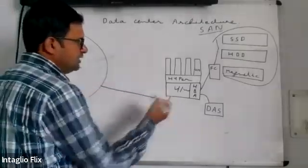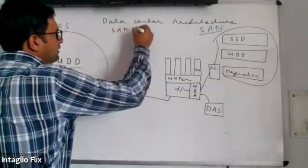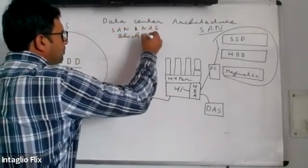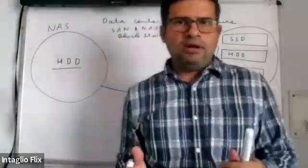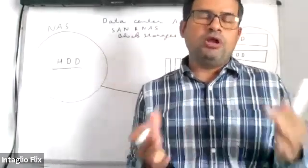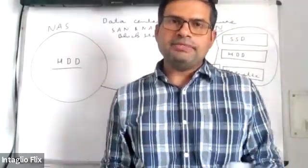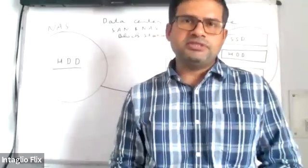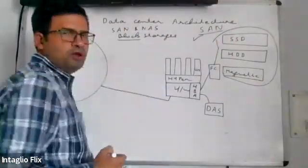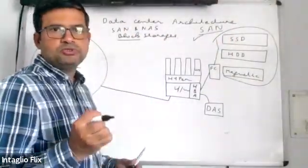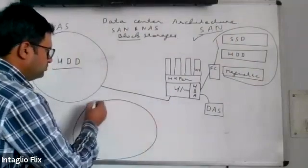NAS is cheaper because it uses cheaper drives in the back end and does not require a fiber channel for connection. Both SAN and NAS are block storages. In block storage, data is stored block by block with a fixed block size. Block storage is always used for structured data — virtual machines, databases, servers, and OLTP (Online Transaction Processing) applications all use block storage.